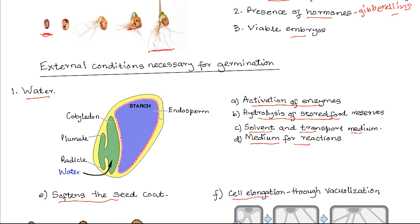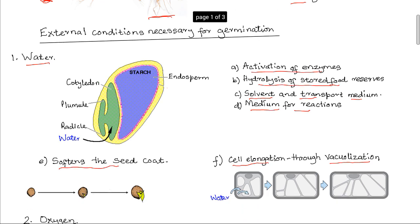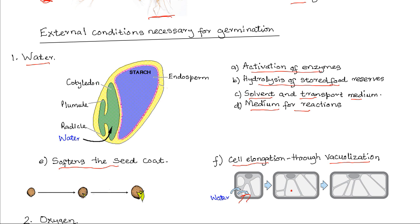Water also plays a role in cell elongation through the vacuolization process — that is, the formation of vacuoles. As water enters the cells, vacuoles form, causing expansion of the cells, which brings about cell elongation and contributes to the overall growth of the seedling.